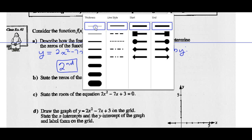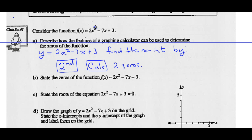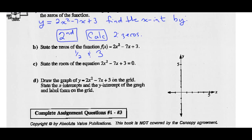State the zeros of the function: the zeros are 1/2 and 3. State the roots of the equation — they should be the same. If I factor 2x² - 7x + 3, my factors are (2x - 1)(x - 3) = 0, and those roots will be x = 1/2 and x = 3.